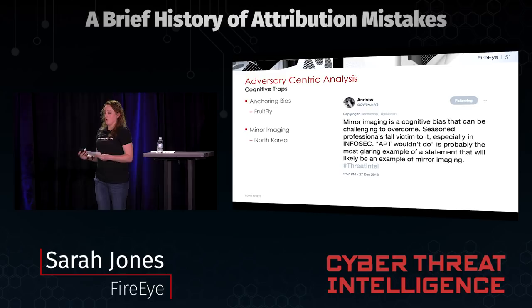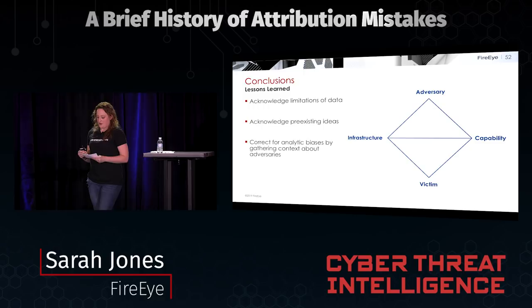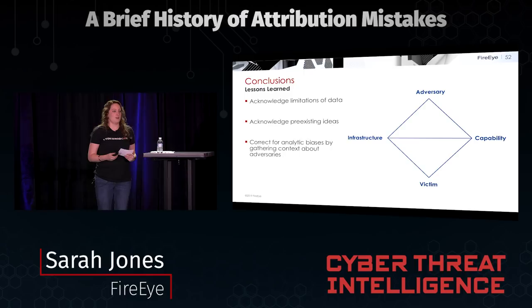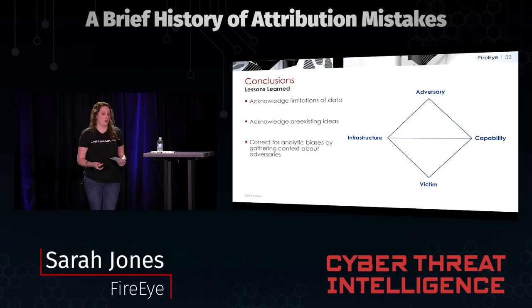In conclusion, how can we avoid these analytic pitfalls? First, we need to understand where our data comes from and more specifically its limitations — find gaps in our knowledge and be comfortable with the idea that sometimes those gaps can't be filled. Second, acknowledge and avoid preferences for data we have access to and are comfortable working with — start looking for missing data even when it's hard to observe and collect. Finally, correct for analytic bias by gathering context about the adversaries we want to observe. These cognitive biases negatively affect both our perceptions and our analysis, and prevent us from making realistic predictions about the future to our decision makers and customers.